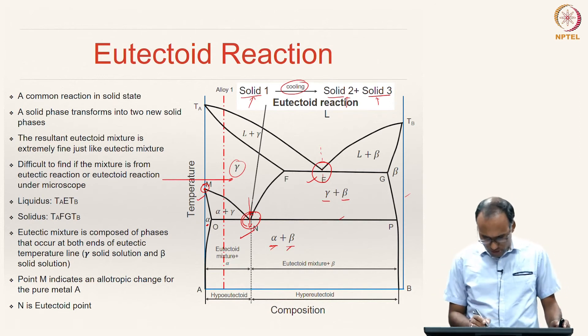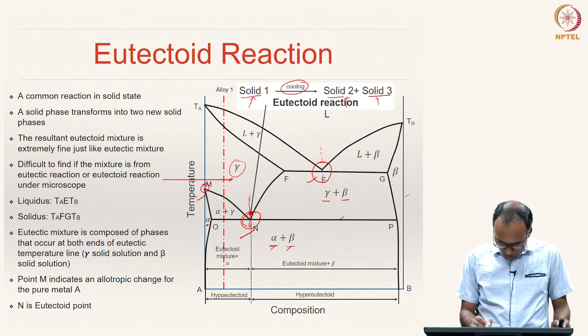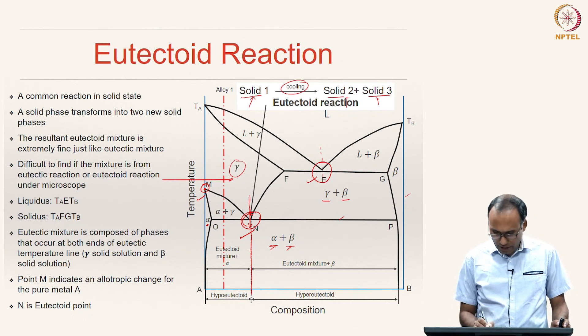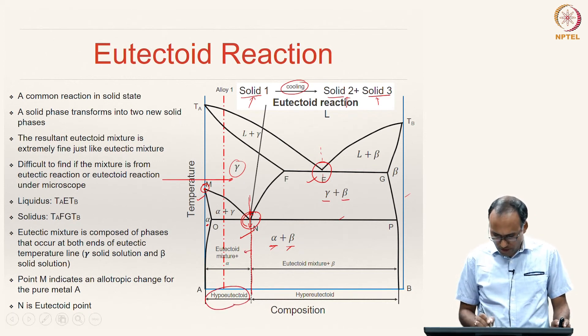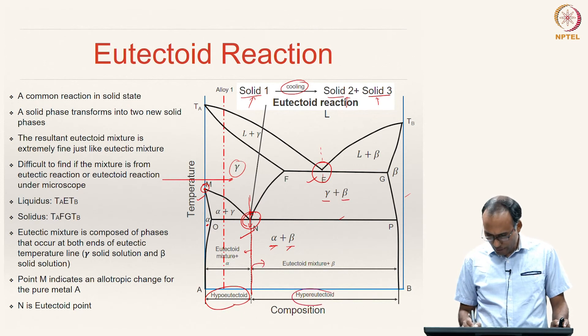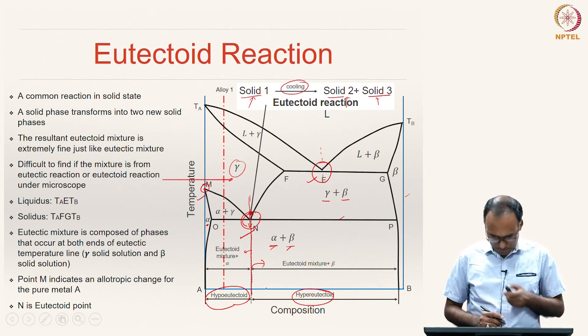The alloy at the eutectoid point is called the eutectoid alloy; alloys to the left of that are called hypo-eutectoid alloys, and alloys to the right are called hyper-eutectoid alloys.